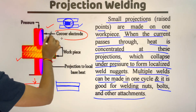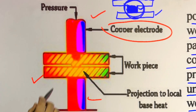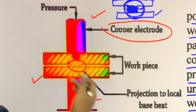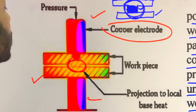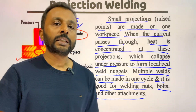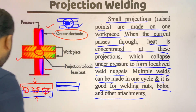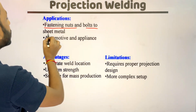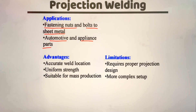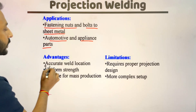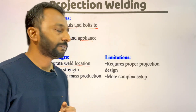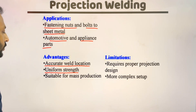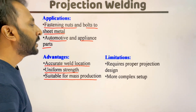The electrodes are mainly made of copper metal. We can see that a portion of the work piece is projected, and when pressure is applied along with electrical resistance, the projected area is fused and after solidification we get a welding joint. Applications of projection resistance welding include fastening nuts and bolts to sheet metal, and automotive and appliance parts. Advantages include accurate weld location — we can weld at a precise particular area — uniform strength in the welding joint, and it is suitable for mass production.